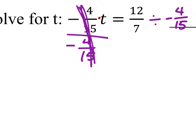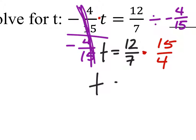But again, we don't really divide the fractions. We're really going to multiply it. So we've got twelve-sevenths times fifteen-fourths. So t equals... What the heck is that?